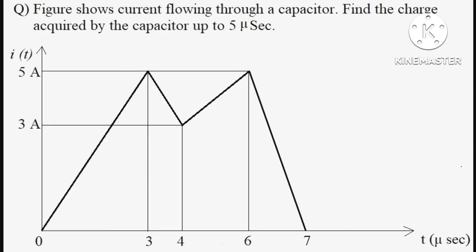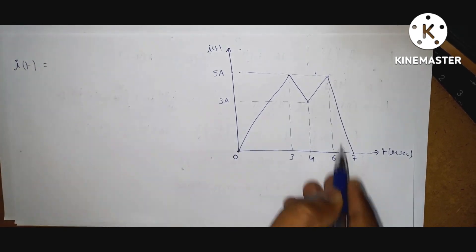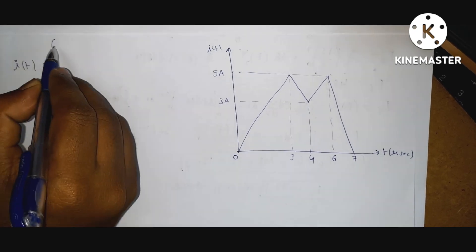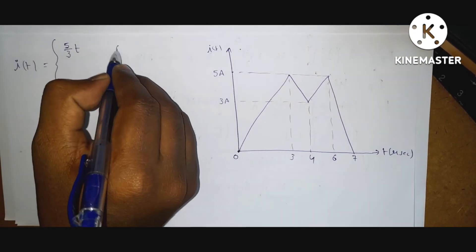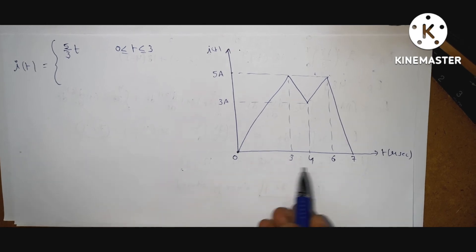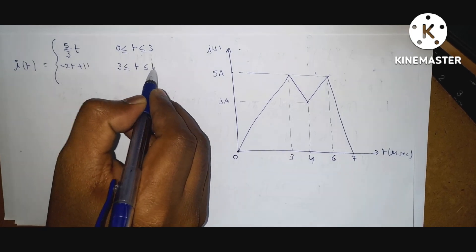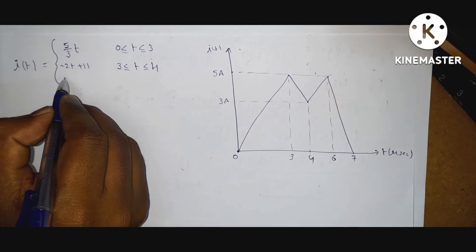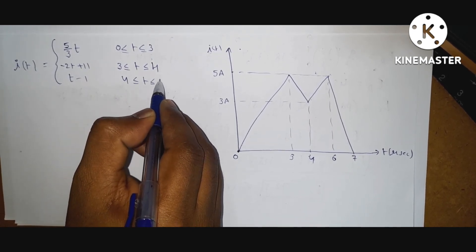Next question. The figure shows current flowing through a capacitor. Find the charge acquired by the capacitor up to 5 microseconds. First, write down the current expression. From 0 to 3 seconds, from 3 to 4: minus 2t plus 11. From 4 to 6 seconds: 4. In the given question they ask up to 5 microseconds, so up to 6 seconds is enough.